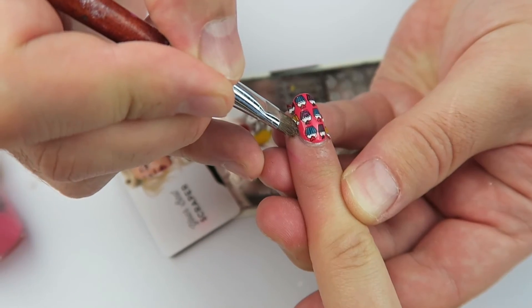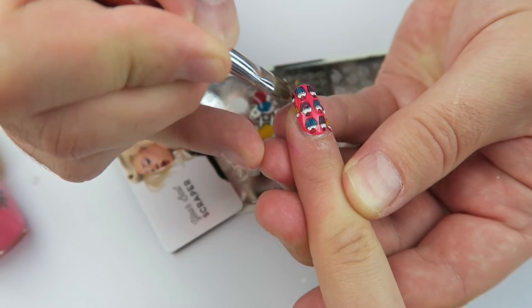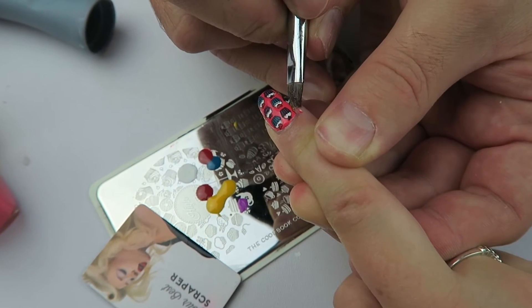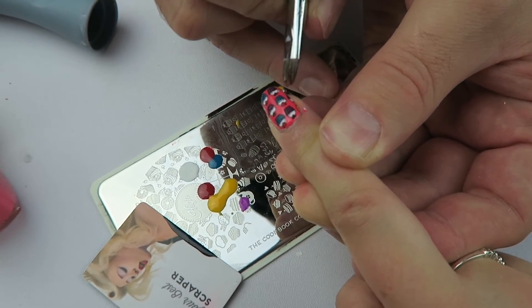Then we are going to take a brush with some acetone on it and we are going to clean up around the nail removing any polish that's got onto the skin.